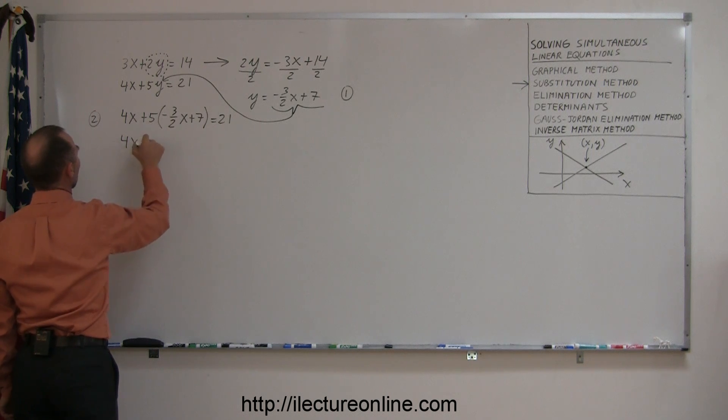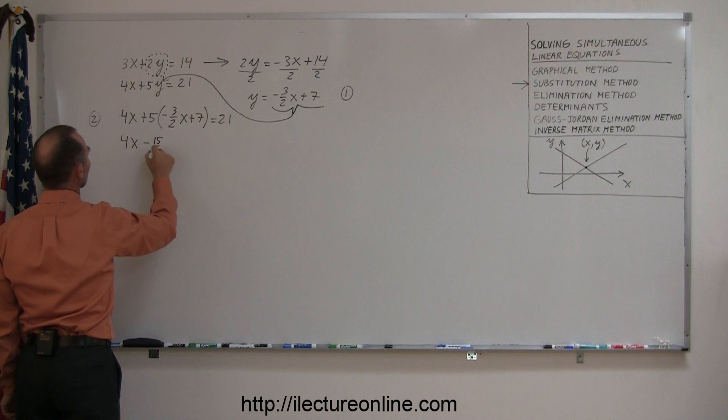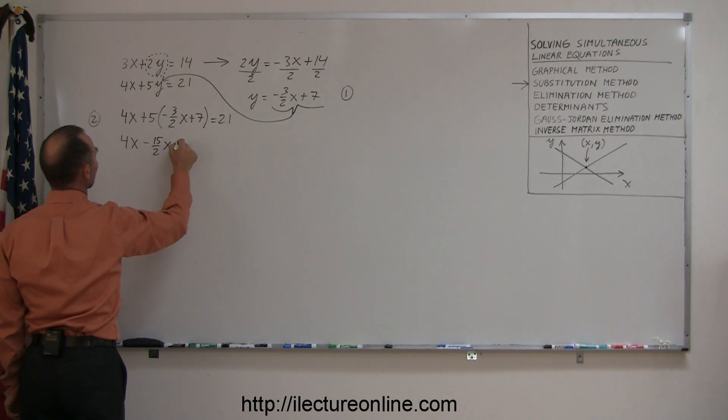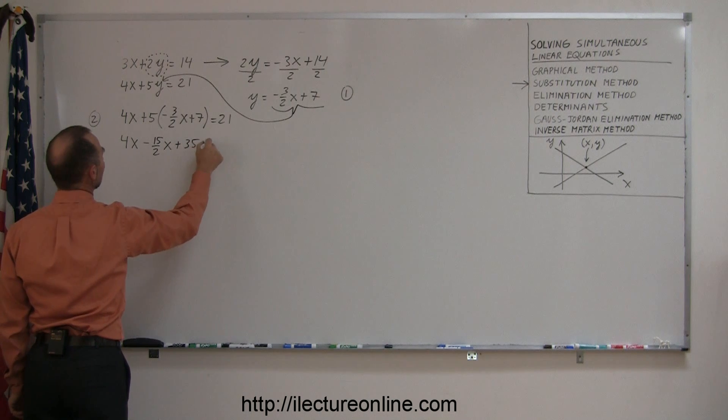So we have 4x, 5 times a minus 3 over 2x, that's a minus 15 over 2x. 5 times 7 is 35, so plus 35 equals 21.